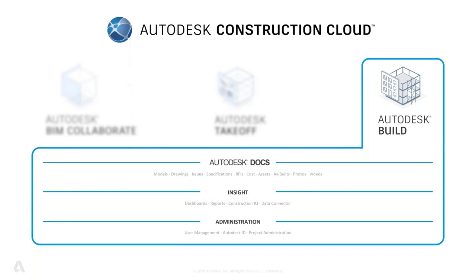The next product is Autodesk Build, which is also built in the Unified Platform. There are still two products out there: BIM 360 Build and Autodesk Build — they are two completely separate products. They have a lot of overlap, but there are more abilities and things being built into Autodesk Build, and that is the future moving product — the one that's moving forward.